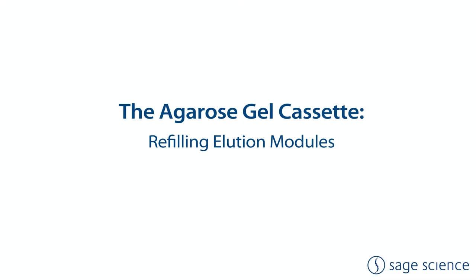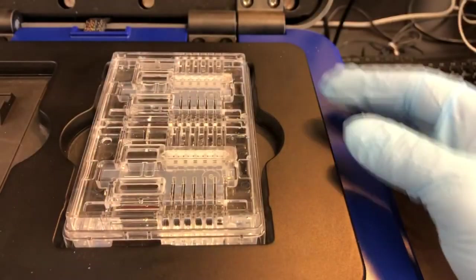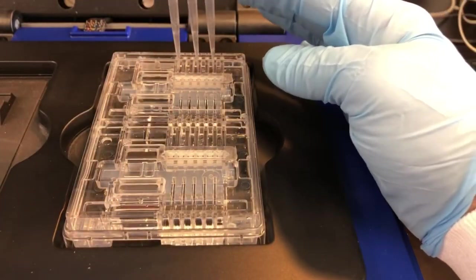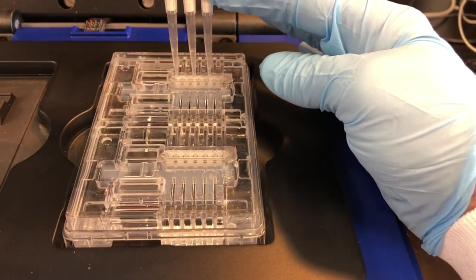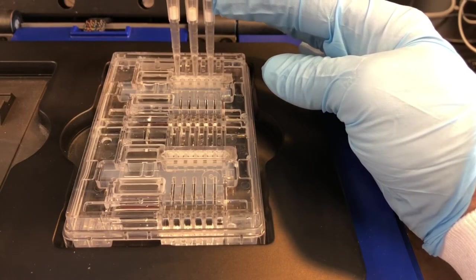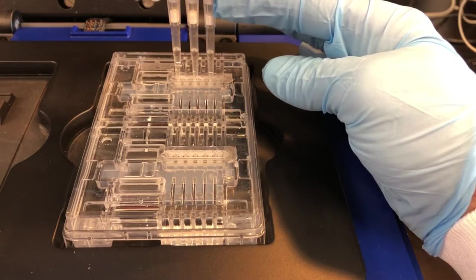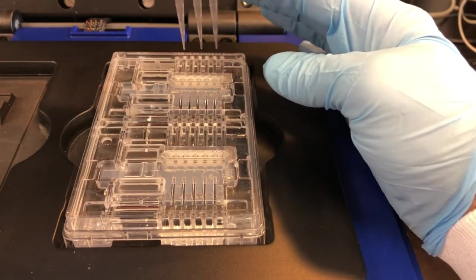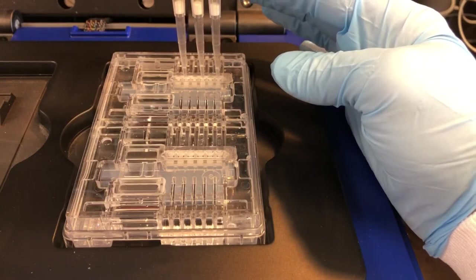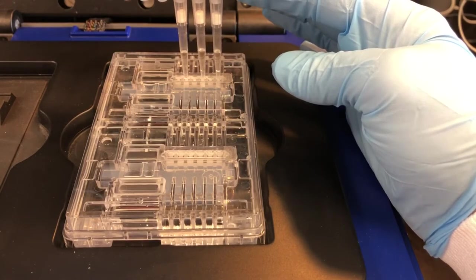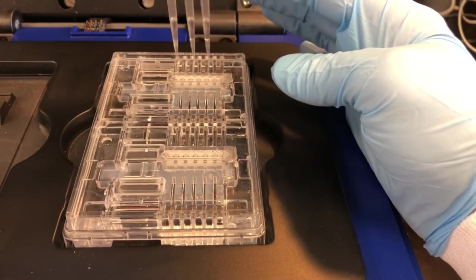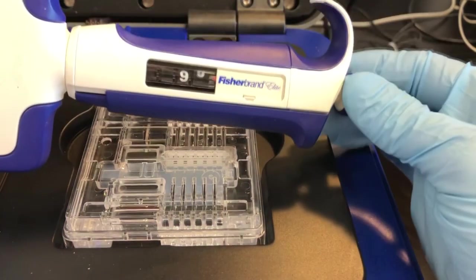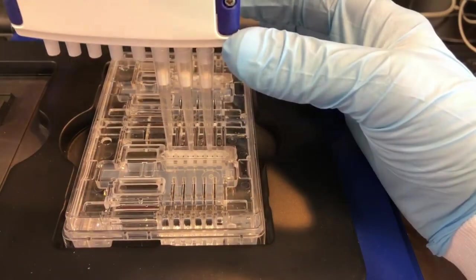After unsealing the cassette, elution modules must be completely emptied and refilled. There are six elution wells on a 4.5mm spacing. An eight channel pipetter with three tips can be used to aspirate every other well. The total volume of the modules is 90 to 95 µL. So set the pipetter to at least 100 µL to ensure complete removal of buffer from the wells.